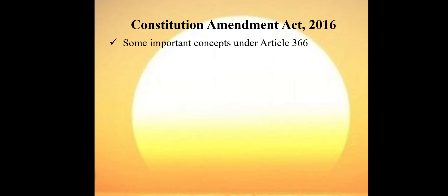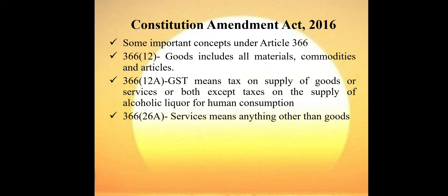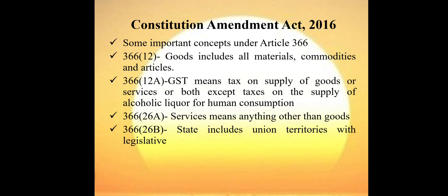There is another constitutional amendment, Article 366, where some definitions have been given. Article 366(12) states that goods includes all materials, commodities and articles. Article 366(12A) defines GST as the tax on supply of goods or services or both, except taxes on supply of alcoholic liquor for human consumption. Article 366(26A) defines services as anything other than goods. These simple definitions have been inserted in Article 366 because of GST. The definition of 'state' for the purpose of the GST Act includes union territories having their own legislature.